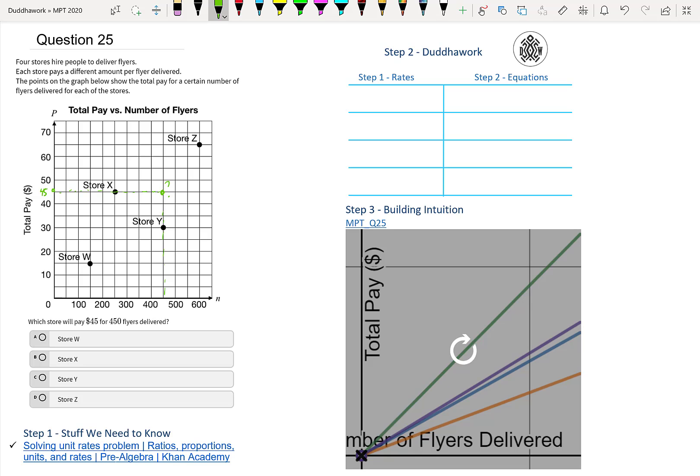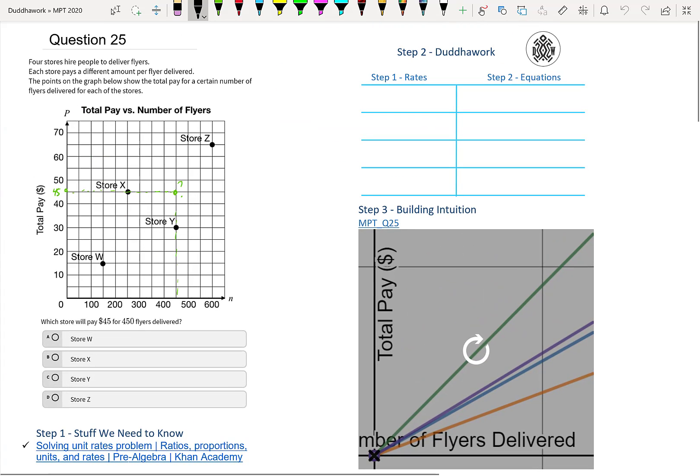We have to look at how much each store pays to deliver one flyer and then extrapolate to 450 flyers because they don't tell you exactly this. And I know extrapolate is a big word, but don't worry about it. I'll explain it. So what we do here is we calculate the amount of money each store is willing to pay to deliver one flyer. So essentially it's like your hourly wage, but here it's your flyer wage. So if we start with store W, I'll just write W, X, Y, and Z.